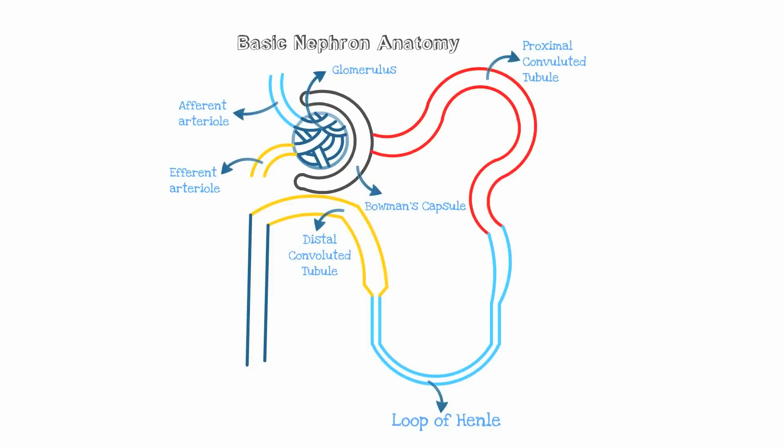Whatever is not absorbed passes down into the efferent arteriole. The filtrate that is absorbed passes into the proximal convoluted tubule where bicarbonate is absorbed, and then it proceeds into the loop of Henle. In the loop of Henle the urine is concentrated, and finally it goes into the distal convoluted tubule, where most acid secretion takes place in the form of ammonium and phosphate.